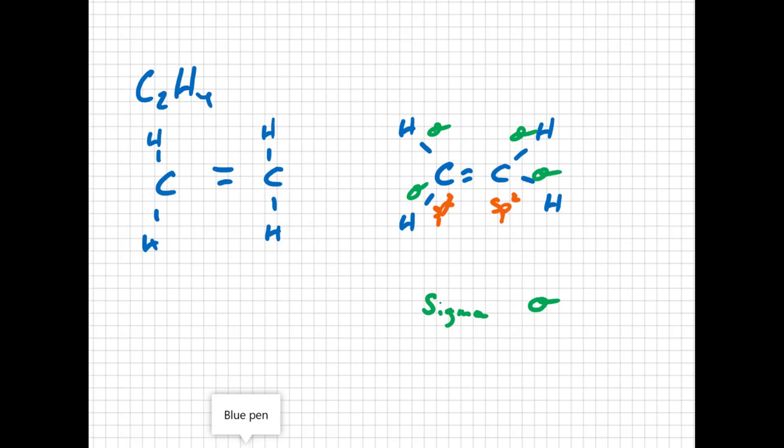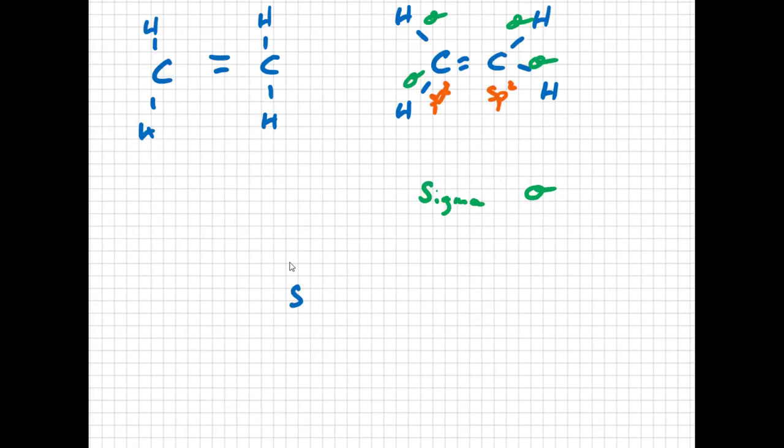I think what's more interesting is to look at that carbon-carbon double bond. If I take a side view of it, what I would see is one carbon here, and that carbon would have an sp2 orbital sticking out of it. I have another carbon with an sp2 orbital sticking out. The other sp2 orbitals are involved with bonding with the hydrogen. I just want to focus on the carbon-carbon bond.